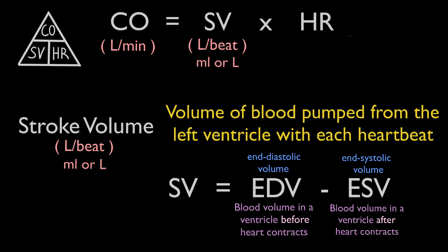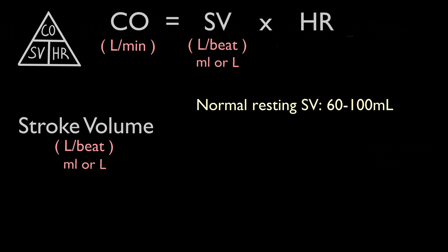Notice that the heart does not expel all the blood in the ventricles during contraction. A normal resting stroke volume is around 60 to 100 millilitres, but it can vary due to factors such as age, sex, and physical activity. During exercise, stroke volume will increase so that the heart can pump more blood to the body's tissues to deliver more oxygen. Other factors that determine stroke volume include the strength of the heart muscle and the resistance to blood flow in the arteries.